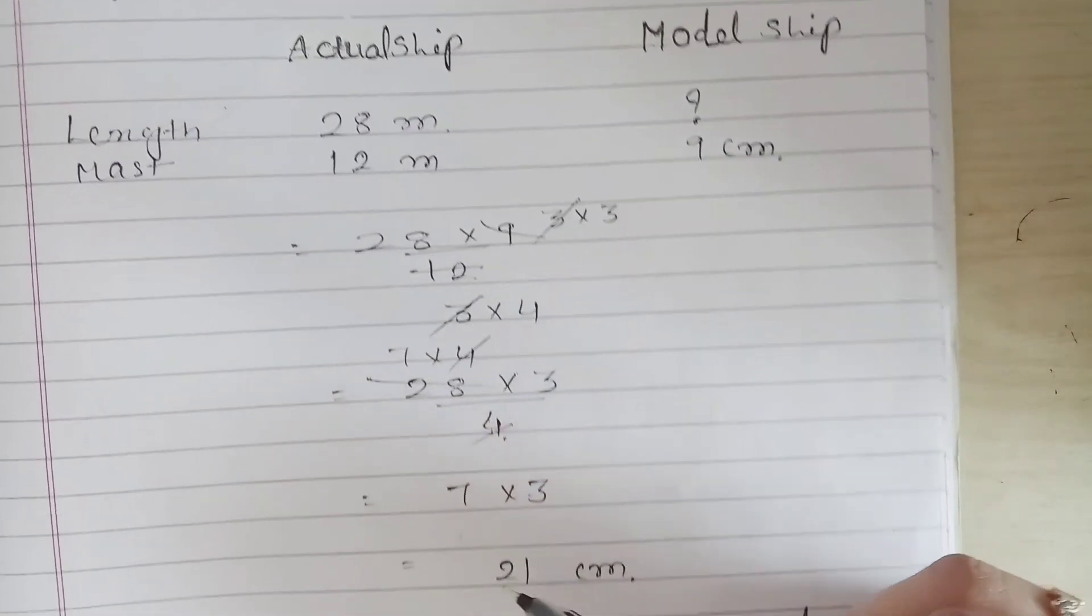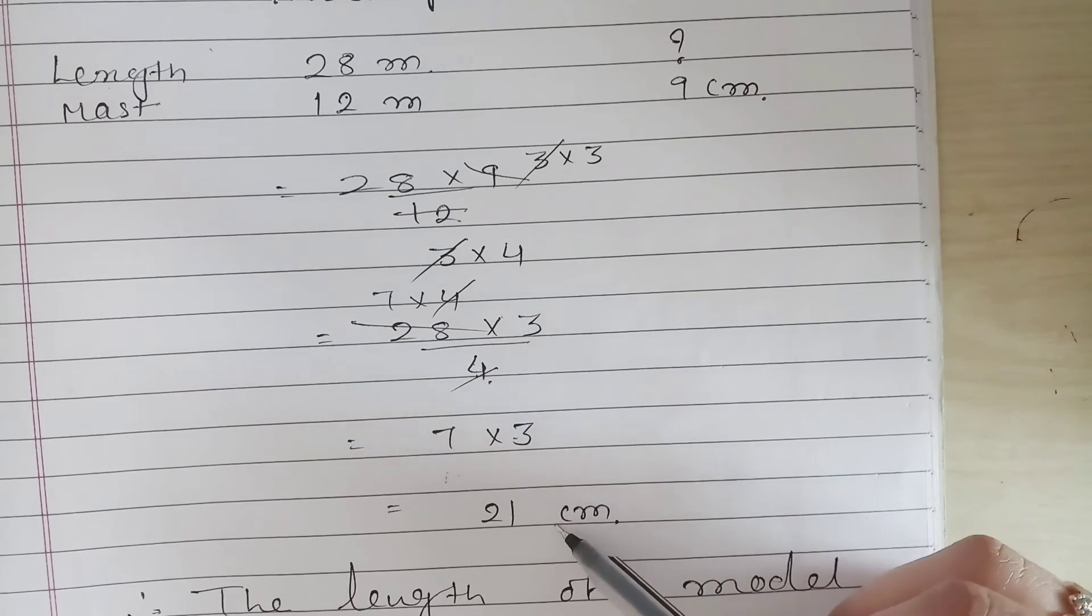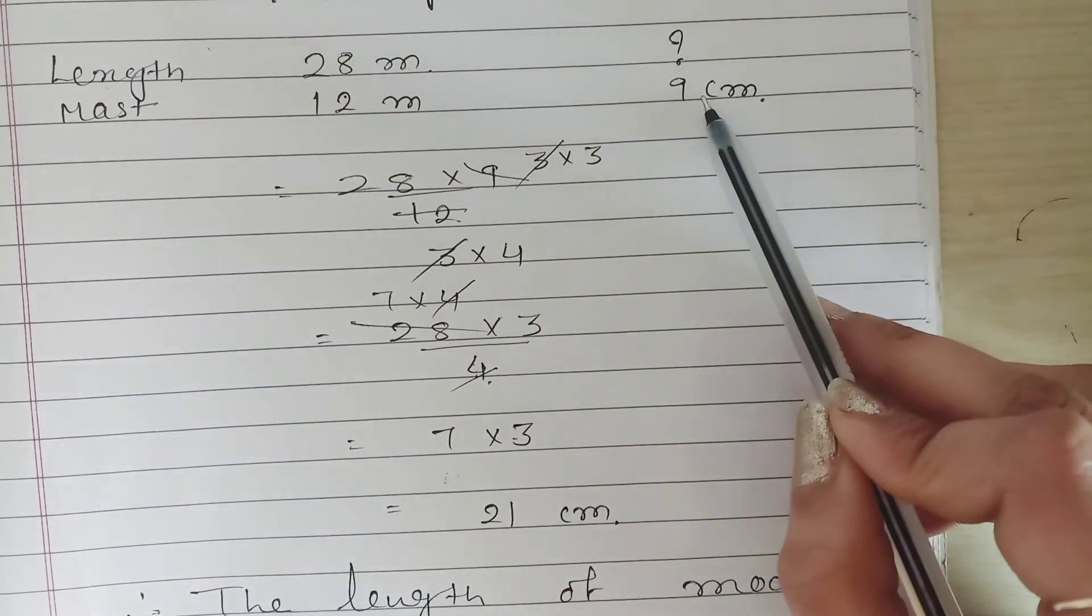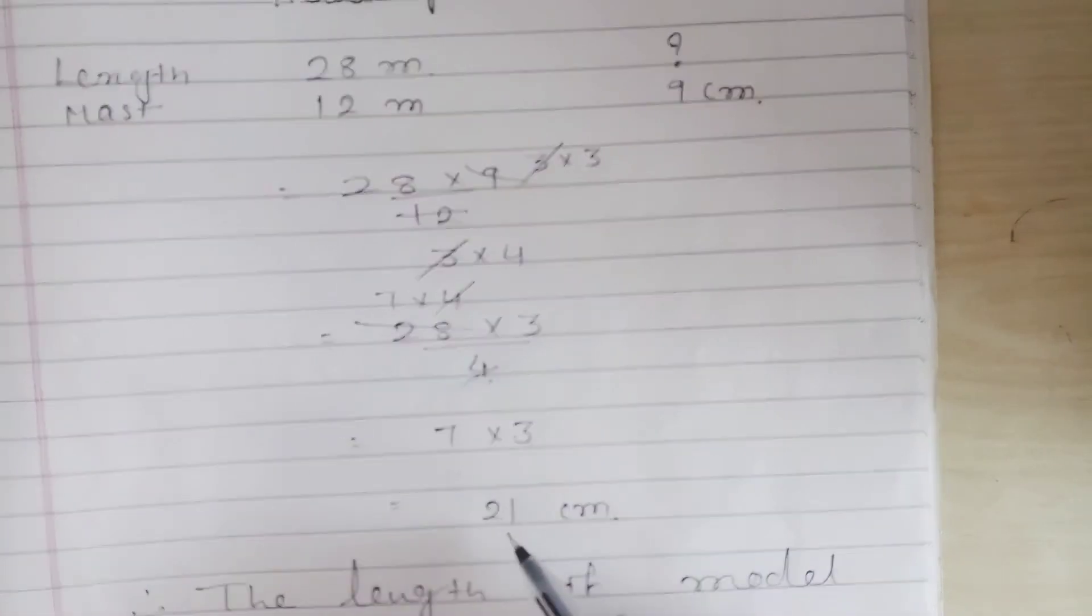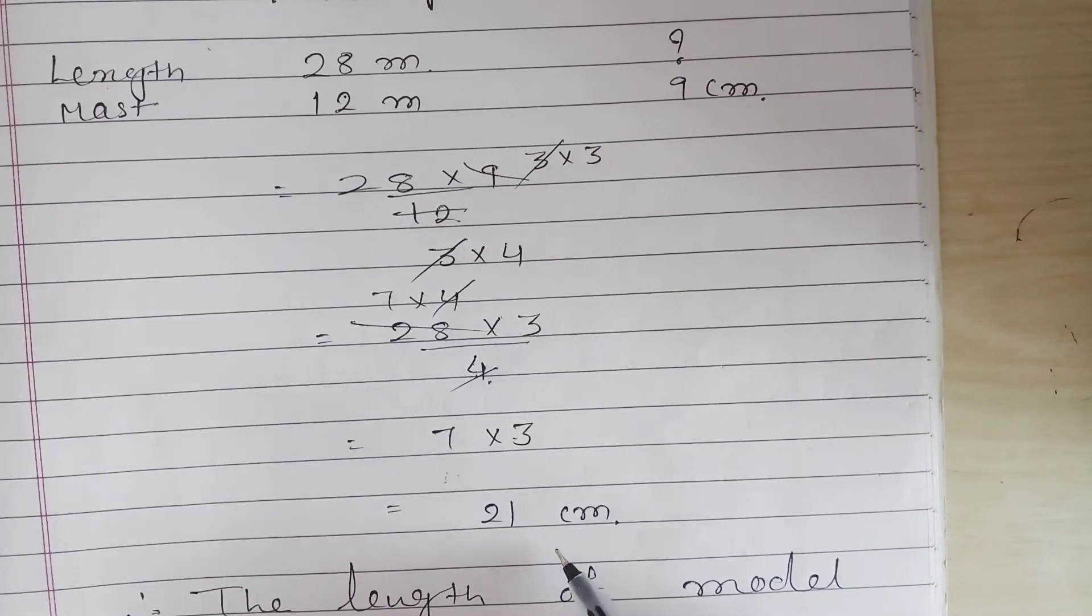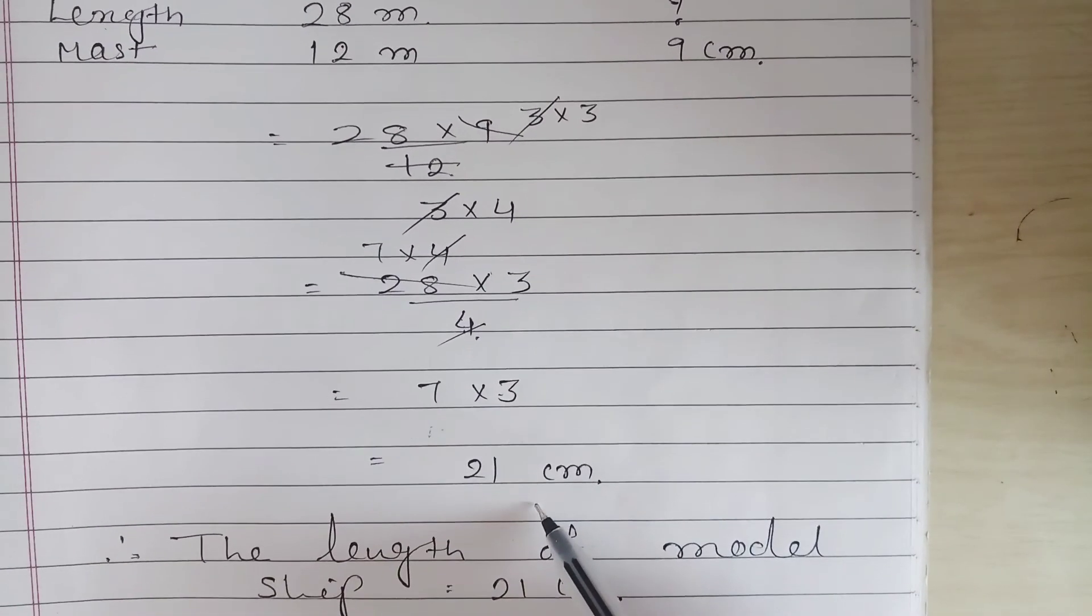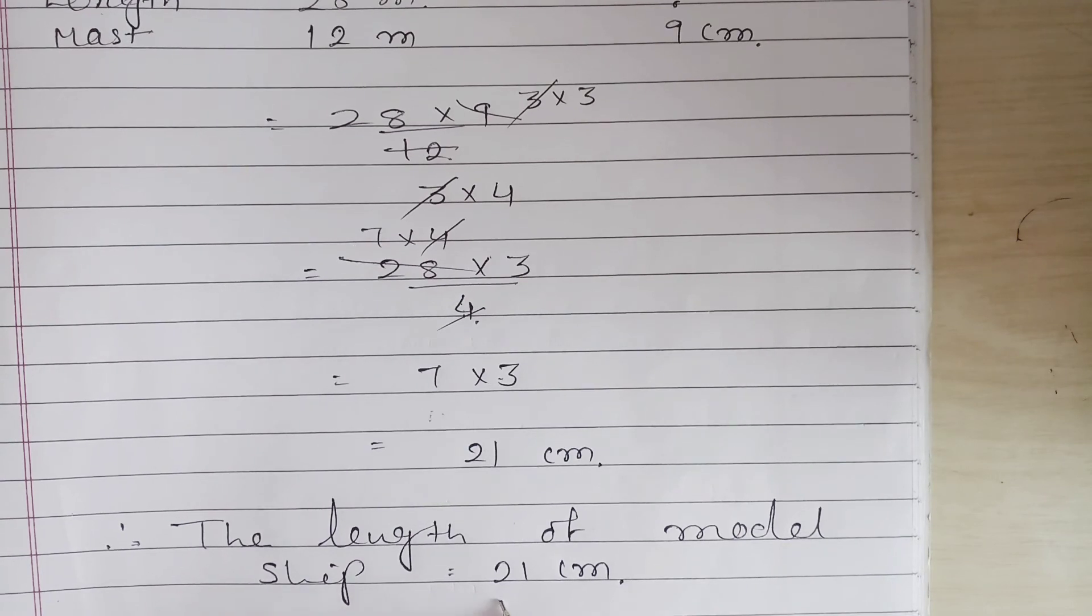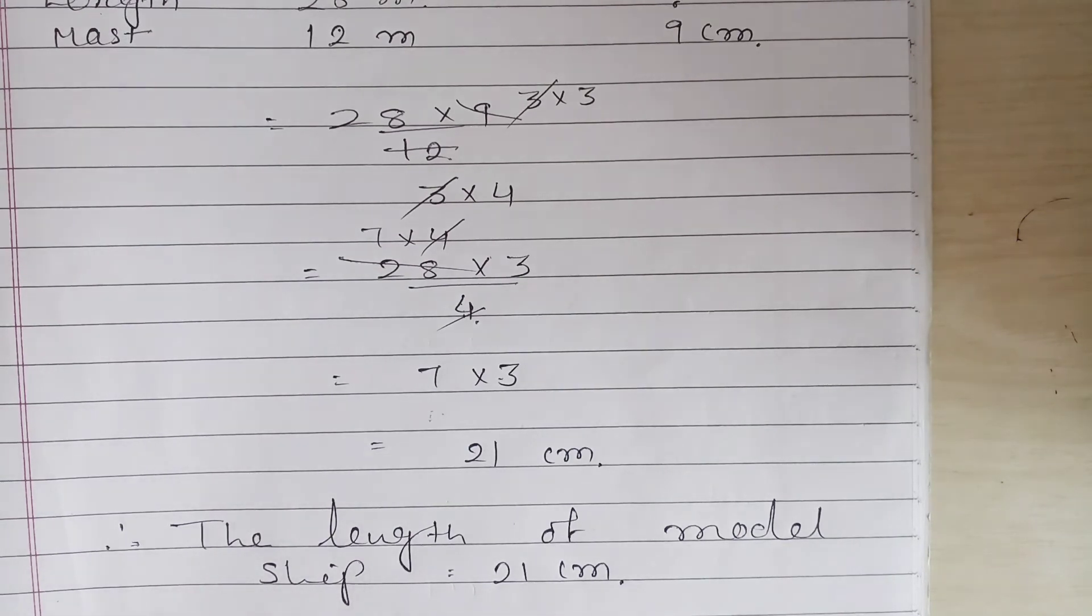So 7 times 3 is 21, and it's in centimeter kyunki model ship jogi iska length centimeter me hogi. So the answer is 21 centimeter. The length of model ship is equal to 21 centimeter. Clear. So this was question number 6 of exercise number 13.1.